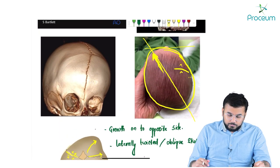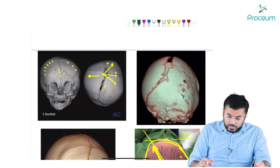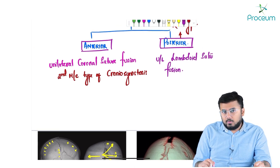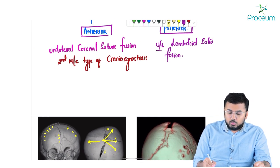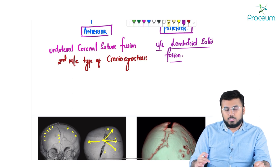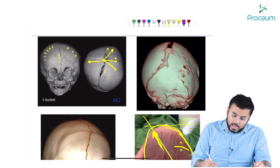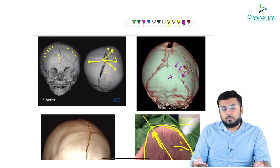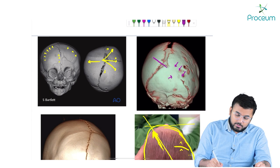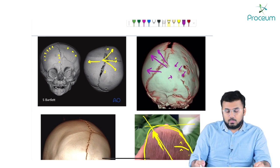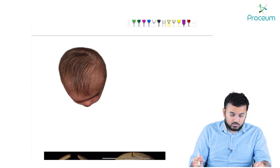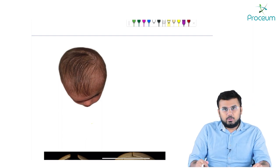In posterior plagiocephaly, the lambdoid suture at the back is fused unilaterally. Development takes place on the opposite side. The skull is again laterally twisted or oblique - this is posterior plagiocephaly.